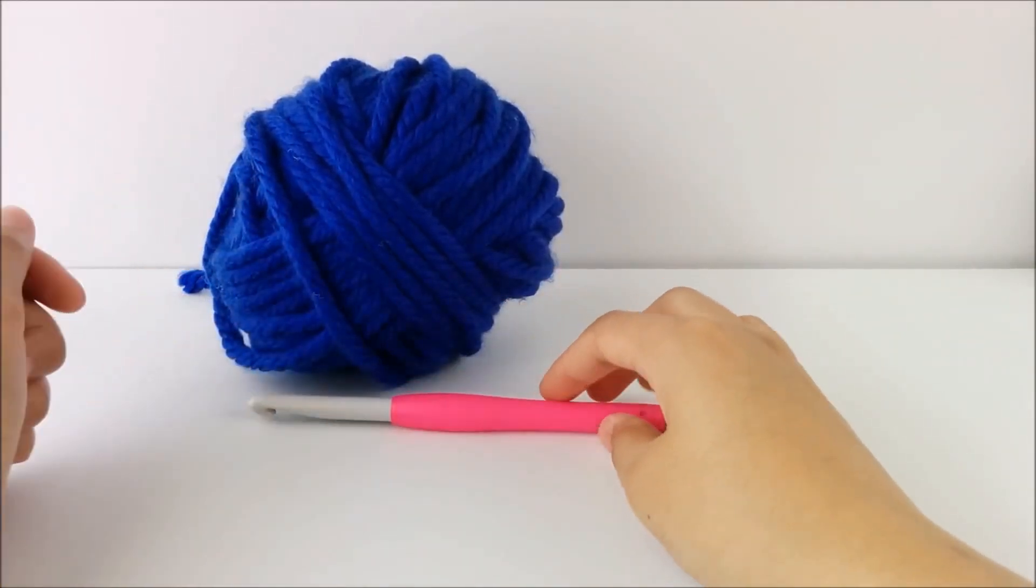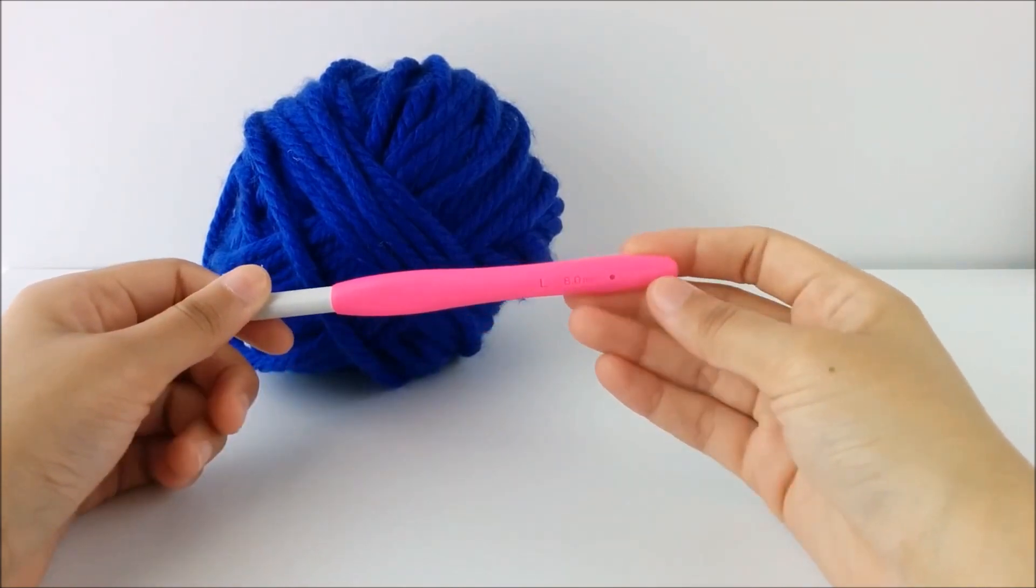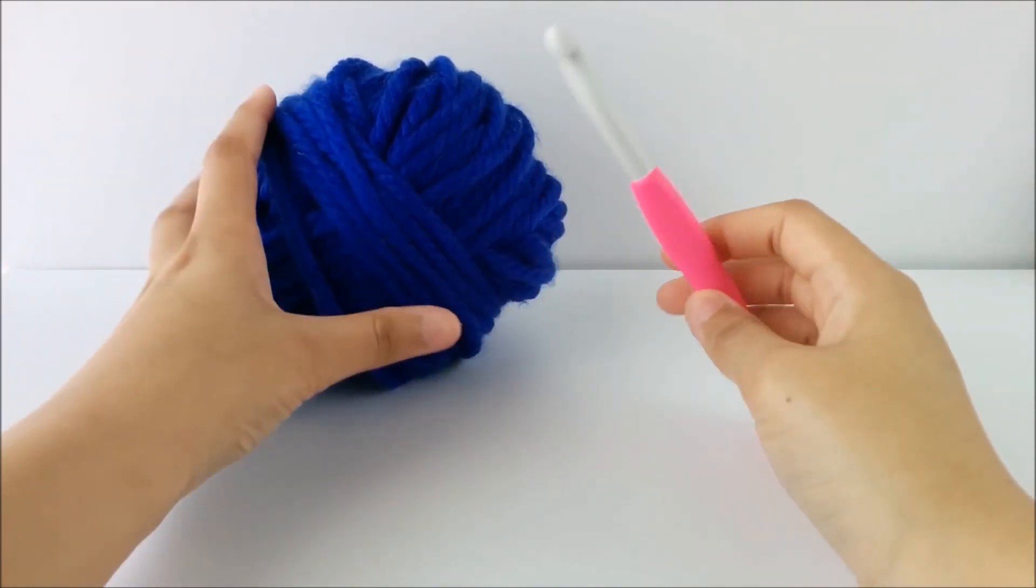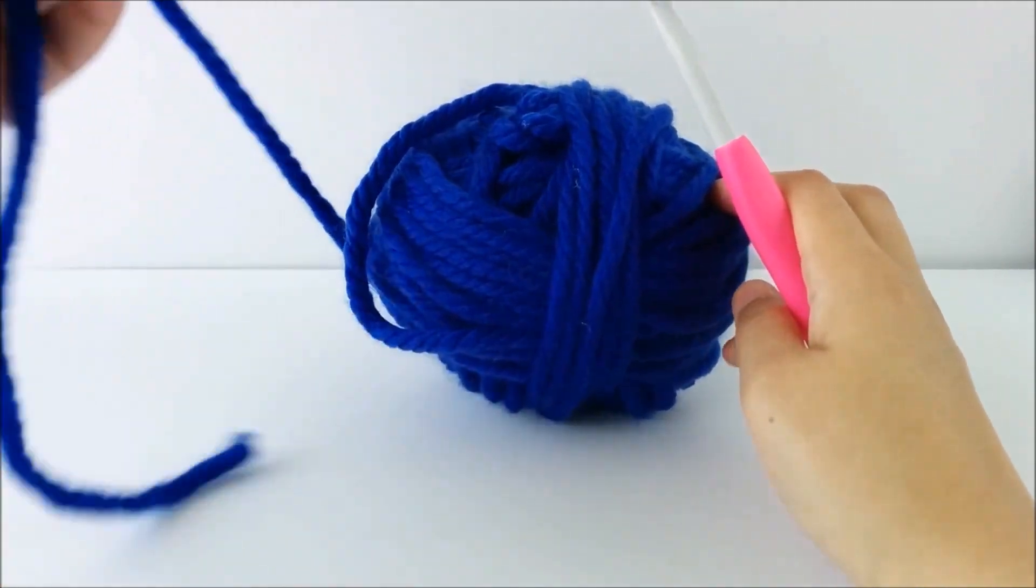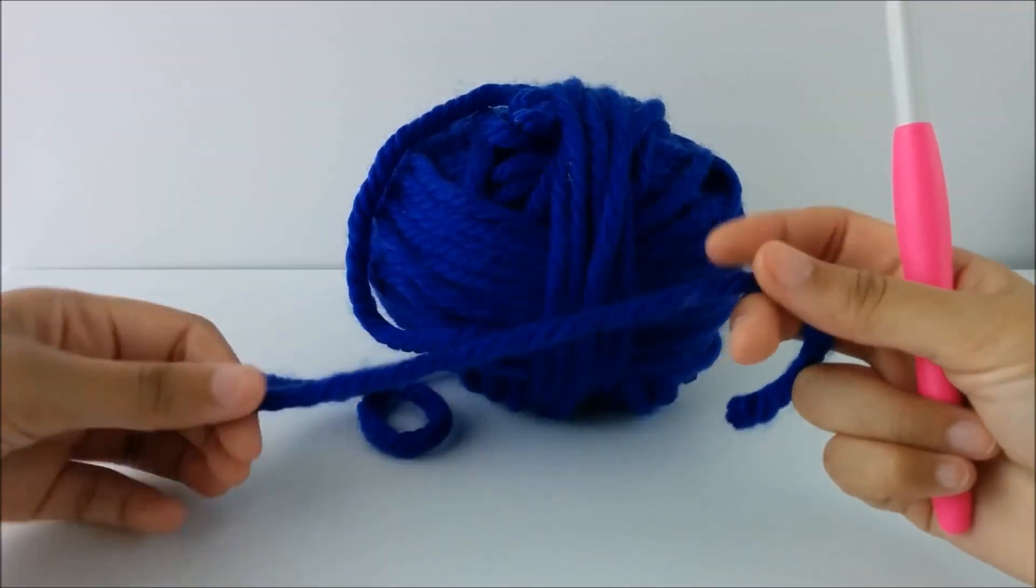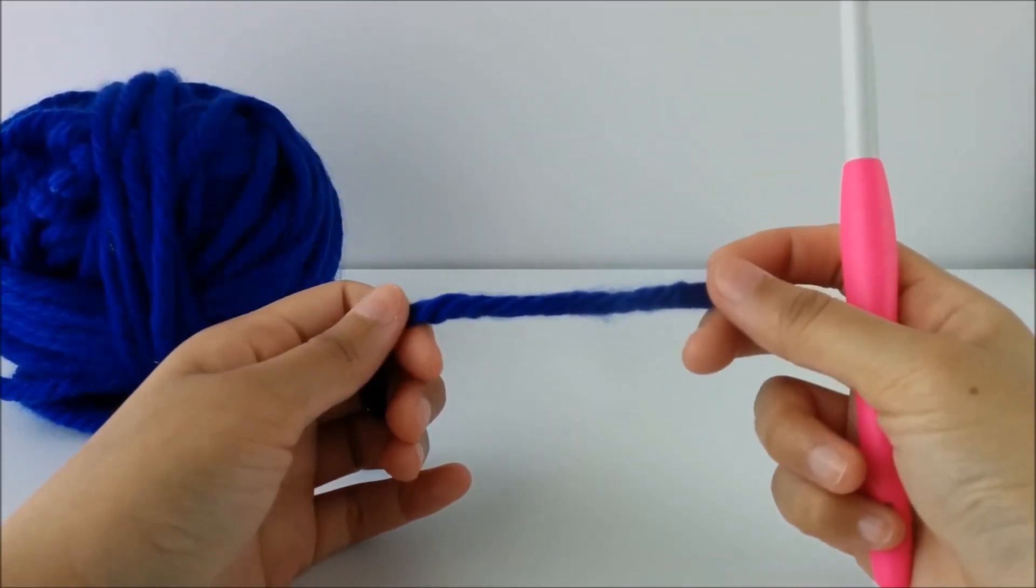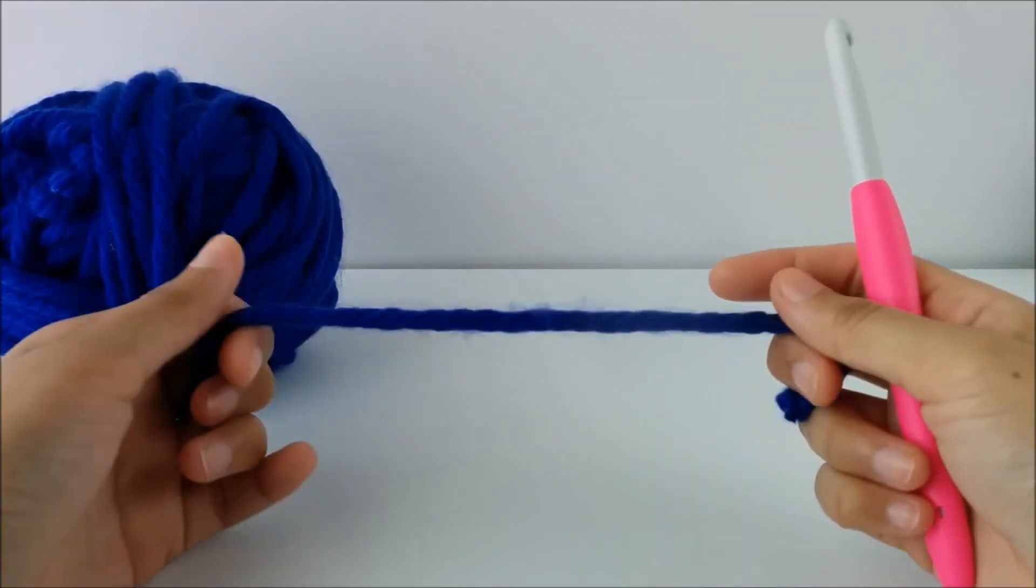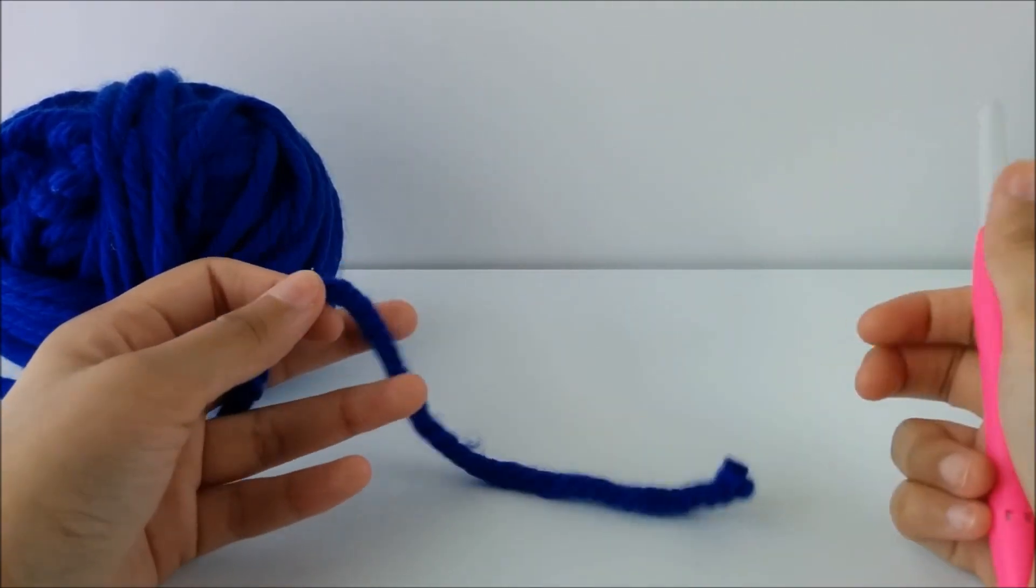So I'm going to be using, for all of my tutorials, this 8mm crochet hook from Clover and a big ball of chunky yarn. This is a thicker yarn and I like it better for beginners and to show tutorials because you can see what I'm doing more clearly and it doesn't split as easily as some other yarns and some thinner yarns do.